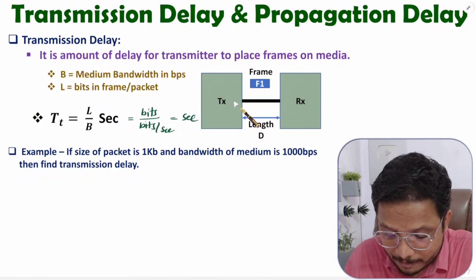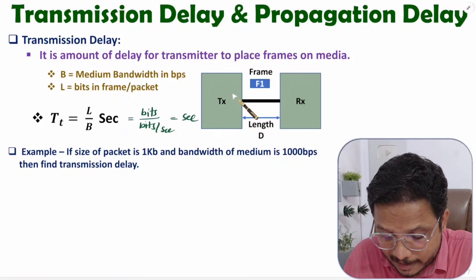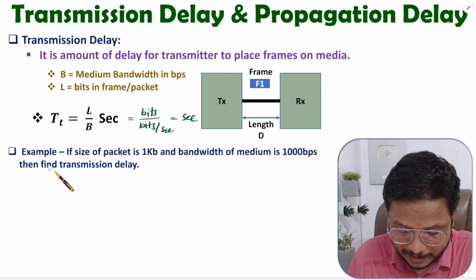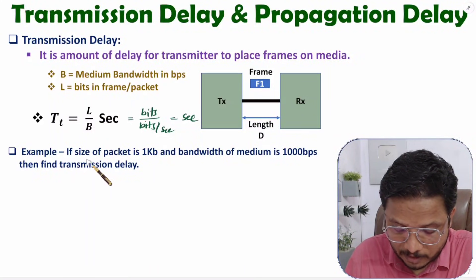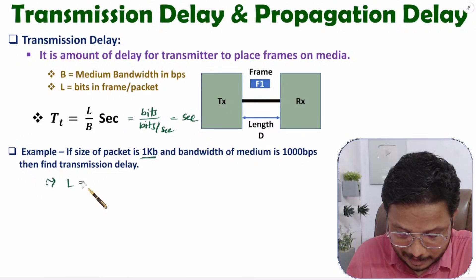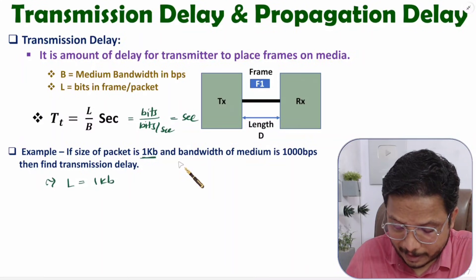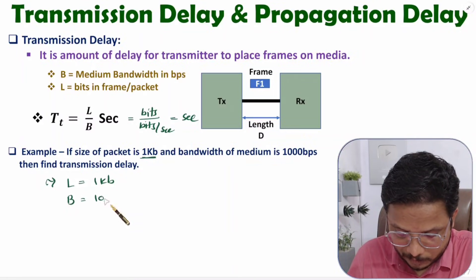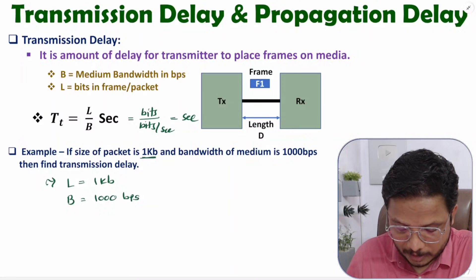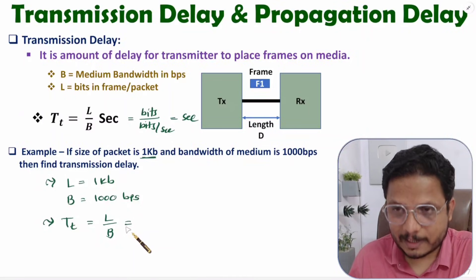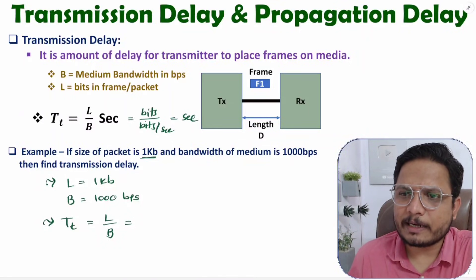Transmission delay is the amount of time required for the transmitter to place a given frame on the media. Now let me explain one example. If size of packet is given as 1 KB, so size of packet L is 1 KB. And bandwidth of the medium is given 1000 BPS. So transmission delay is L by B. Now you might be thinking this is very easy, but there are a few issues which happen in terms of solving questions.